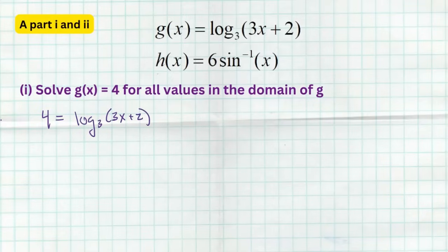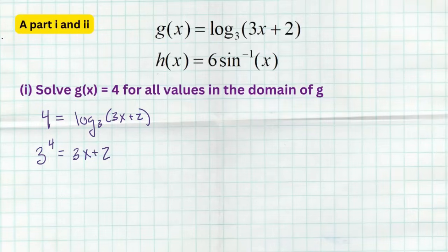To solve a logarithmic equation, you want to get one log all by itself. That's already done for us here. Next, we convert this logarithmic function to an exponential function by taking our base of 3, raising it to 4, and setting it equal to 3x + 2 — that's using the definition of logarithms. Remember, logarithms always equal your exponent, so 4 is the exponent for my base of 3. Then subtract 2, giving 3⁴ − 2 = 3x, then divide both sides by 3.